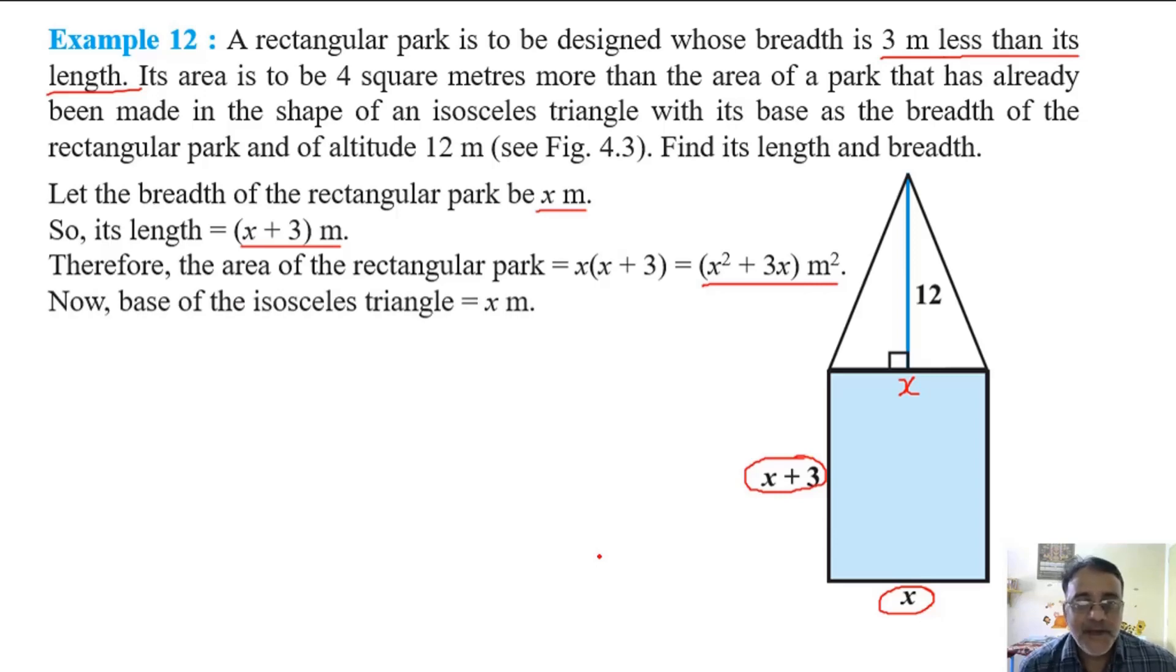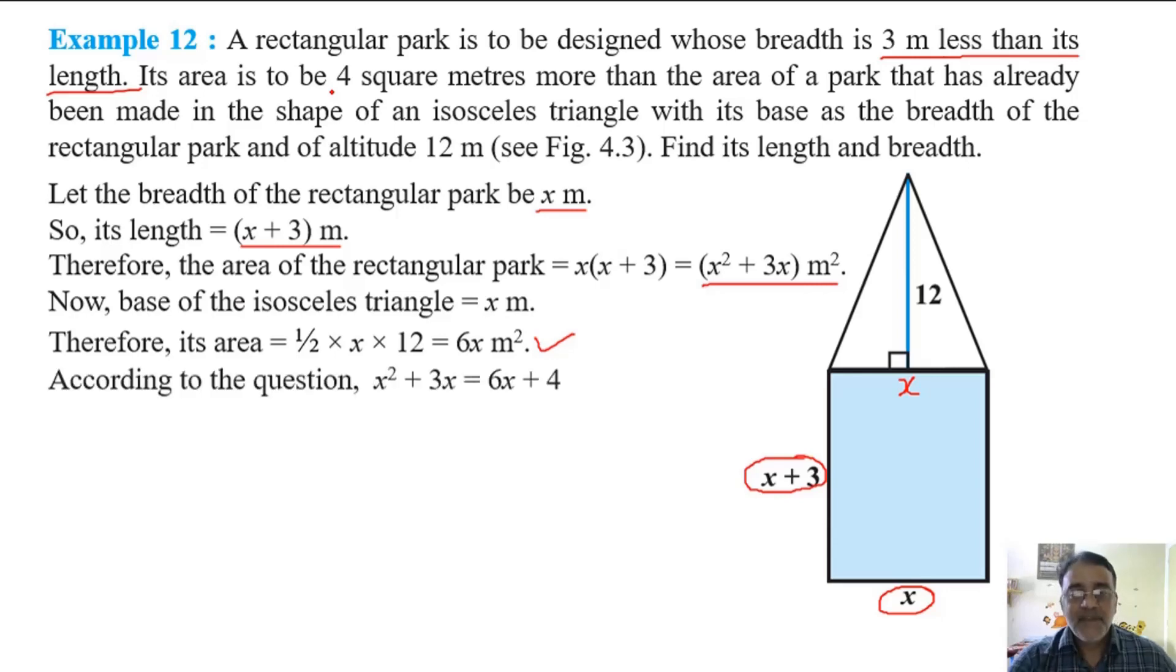So now base of the isosceles triangle is x meter. So area, its area is equal to 6x meter square. Now in the question it is mentioned that the area of rectangular park is 4 square meters more than the area of that park which is in the shape of isosceles triangle. So what you will get? 6x plus 4 is equal to x square plus 3x. Very good. x square plus 3x is equals to 6x plus 4.